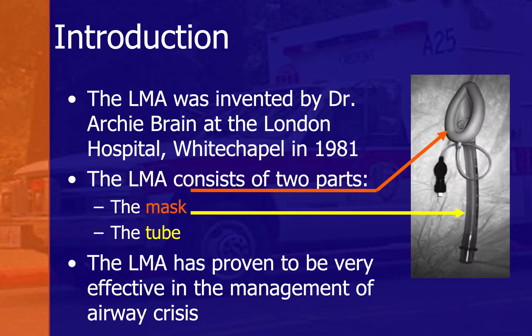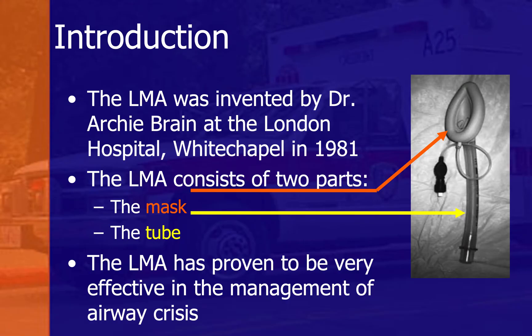Introduction to the LMA: the laryngeal mask airway, or supraglottic airway device, was invented by Dr. Archie Brain at the London Hospital, Whitechapel, in 1981. The LMA consists of a mask and tube, a flattening cup along with the pilot balloon, the shaft tube, and a 15mm connector.